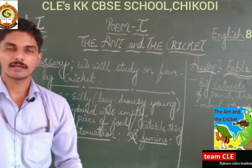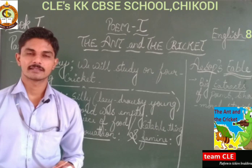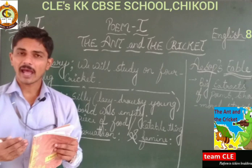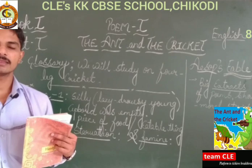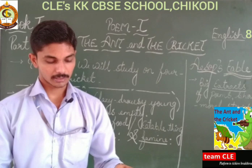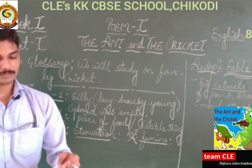In the last stanza the cricket says with enthusiasm: 'My heart was so light that I sang day and night, for all nature looked gay.' The cricket explains: 'I didn't do anything at that time because my heart was so happy. I sang, danced, laughed, and enjoyed each and every moment here and there. That is why I didn't do anything in the summer days.' In stanza four, the rhyming words are: light, night, gay, say.